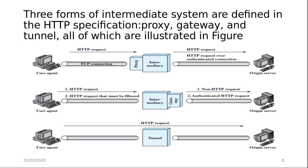The third figure shows a tunnel directly between the user agent and server. Unlike the proxy and gateway, the tunnel performs no operations on HTTP requests and responses. A tunnel is simply a relay point between two TCP connections, and HTTP messages are passed unchanged as if there were a single HTTP connection between the user agent and origin server. Tunnels are used when there must be an intermediary system between client and server, but it is not necessary for that system to understand the content of messages.